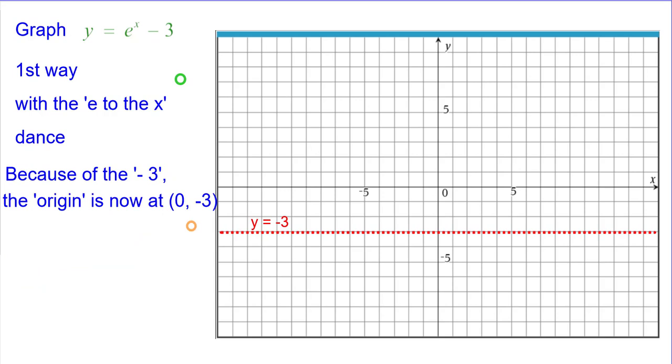And because of the minus 3, the new origin, we'll call it, is now at 0, negative 3, which is in orange. And all points will be plotted relative to this new origin.